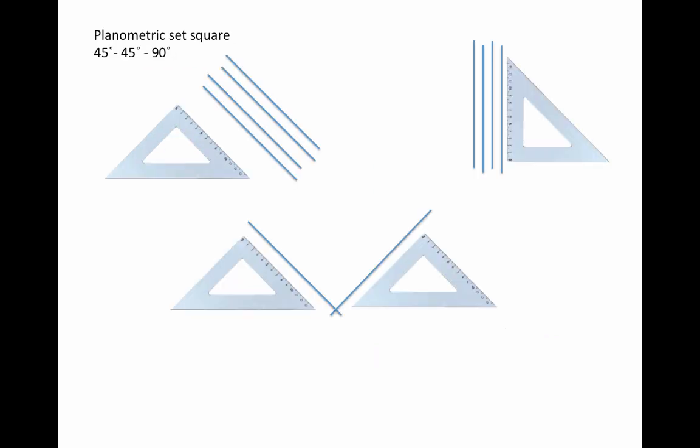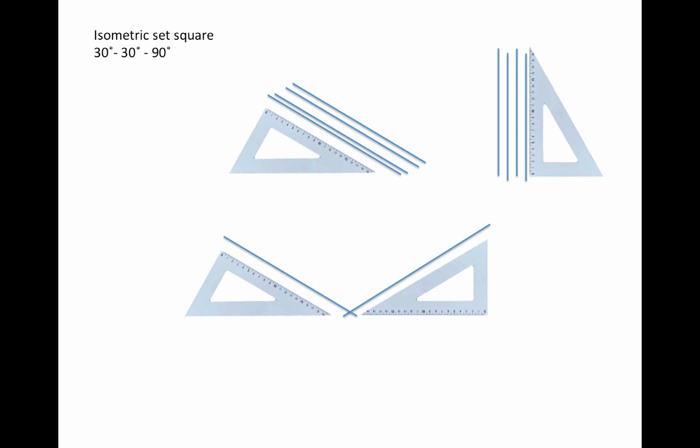The two set squares make very distinct lines. We have a 45 by 45 by 90-degree set square that creates 45-degree lines and 90-degree lines. Our isometric set square creates 30 by 30 by 90 lines. The actual set square itself has one side at 30 degrees, the other side at 60 degrees. We do not use the side that has 60 degrees.